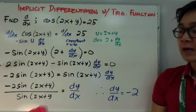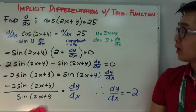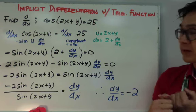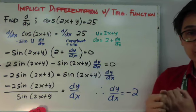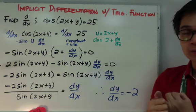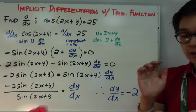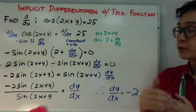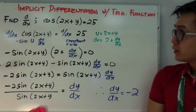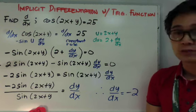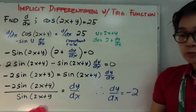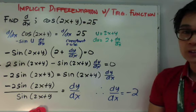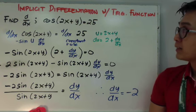So ngayon, gagamitin natin yung differentiation using trig function. Tapos mamaya meron din tayong finding the equation of the tangent line using implicit differentiation. At yung pangatlo is finding the second derivative using implicit differentiation. So let's start with implicit differentiation with trig function. Yung rules niya is parehas lang ng regular na implicit differentiation, pero ngayon meron na siyang trig function. So yung problem natin is,